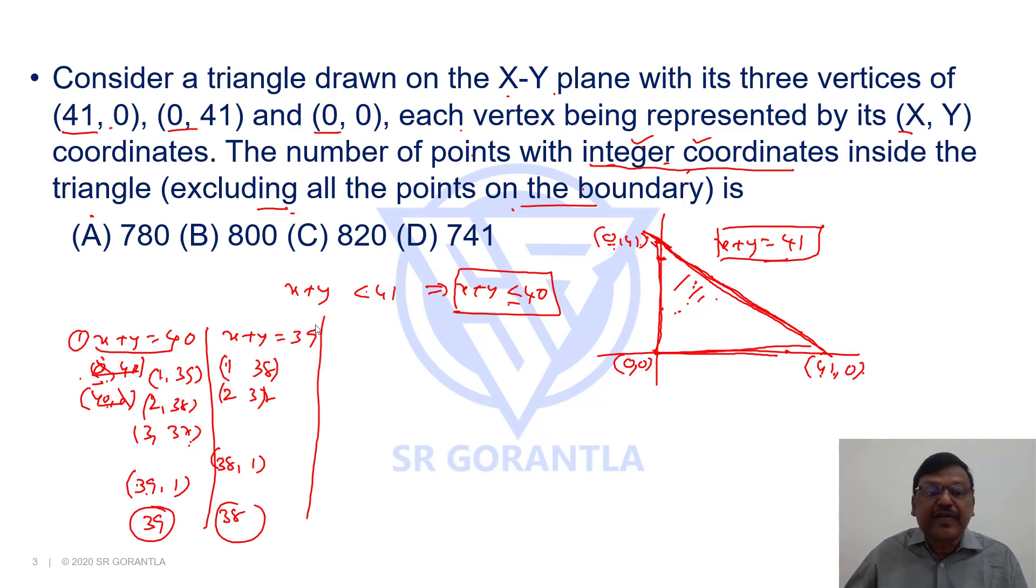And if you look at x + y = 38, if you see here, it is (1, 37), (2, 36) and so on. It can be (37, 1). There are how many possibilities? 37 possibilities.